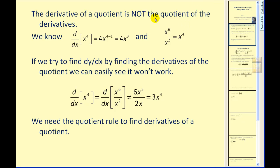The derivative of a quotient is not the quotient of the derivatives. For example, we know the derivative of x to the fourth is equal to four x to the third. So if we wanted to rewrite x to the fourth as a quotient, we could write it as x to the sixth divided by x to the second. If we try to find dy/dx by finding the derivatives of the quotient, we can easily see this will not work.